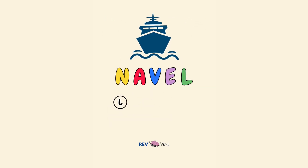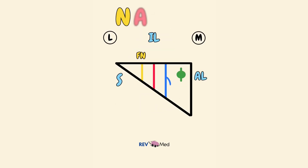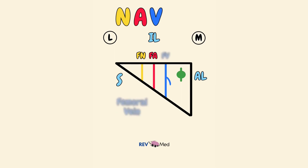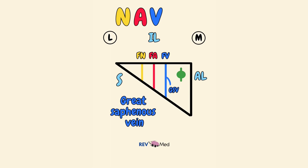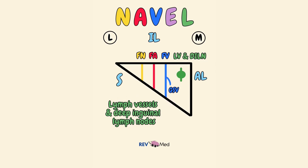Now let's go inside the sailboat to label the contents with another mnemonic — NAVEL, from lateral to medial. N is for the femoral nerve. Medial to it is A for the femoral artery. Medial to that is V for the femoral vein and its tributary, the great saphenous vein. Next is E for the empty space — nothing is actually shown here. L is for the lymph vessels and deep inguinal lymph nodes.